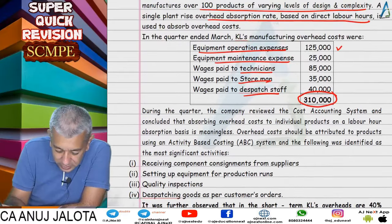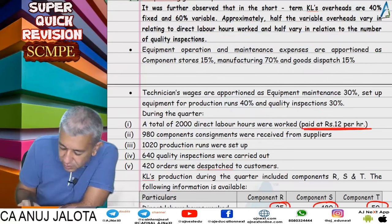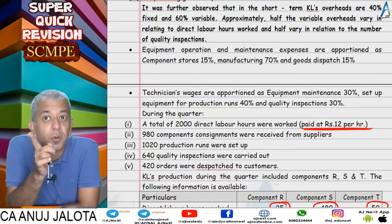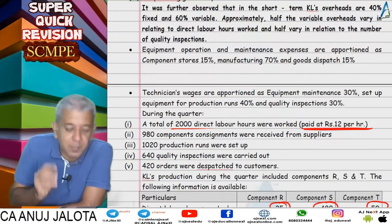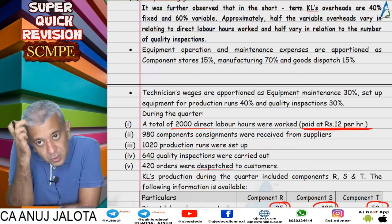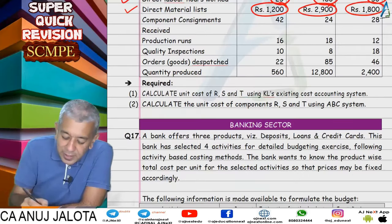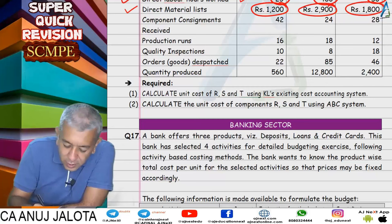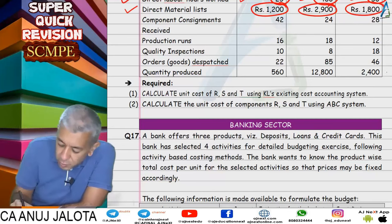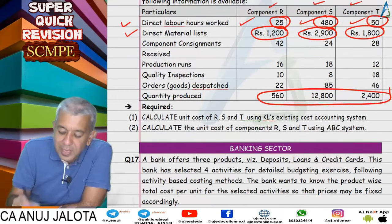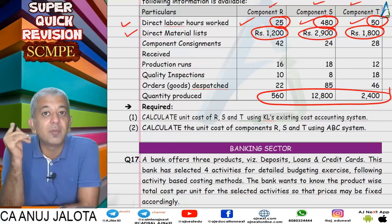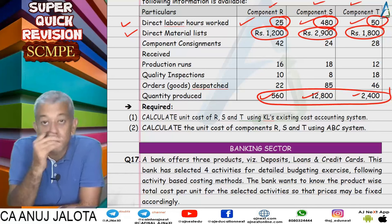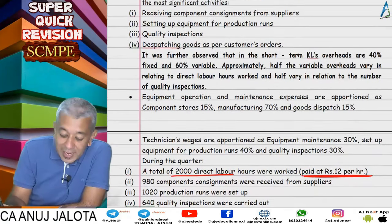Total direct labour hours were given for each product in that quarter. We multiplied labour hours by the wage rate to get labour cost. For overheads using absorption costing, we totalled all overheads — 3,10,000 — and divided by total direct labour hours of 2,000 to get the overhead absorption rate per labour hour. Multiply that rate by each product's hours, add to material and labour, divide by units produced to get cost per unit for products R, S, and T.